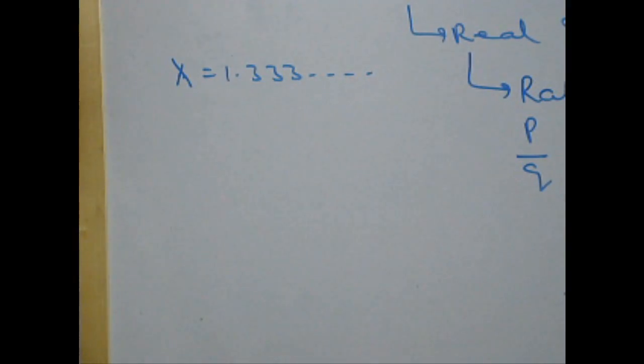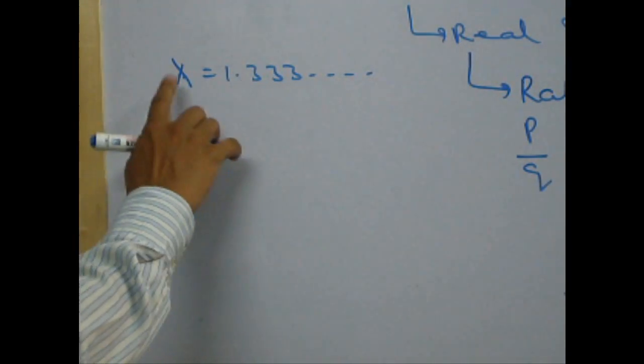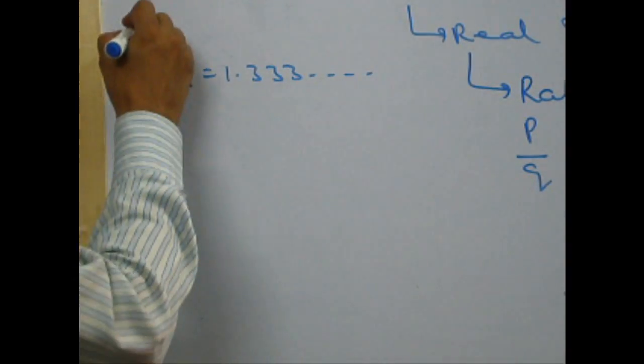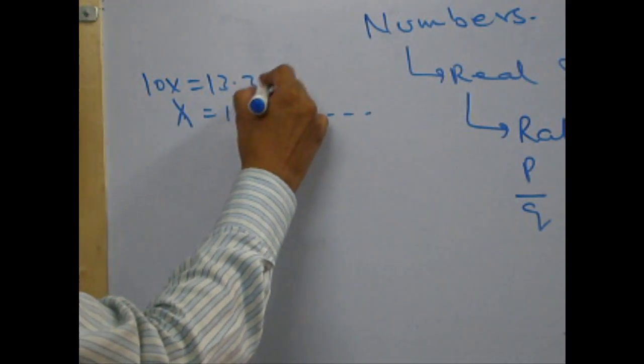Whatever is the number of digits repeating here, that is 1, I will multiply x by 10, which means 10, therefore, getting 10x. And that is 13.333.